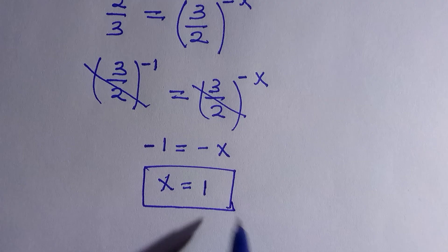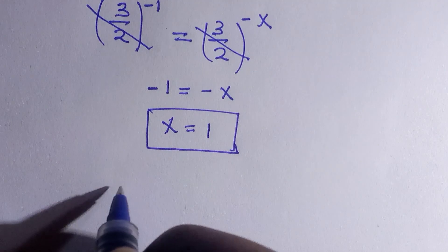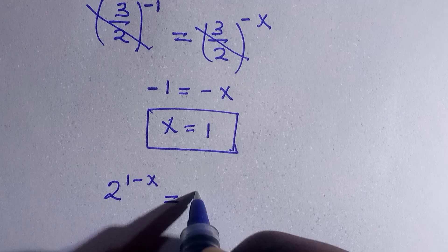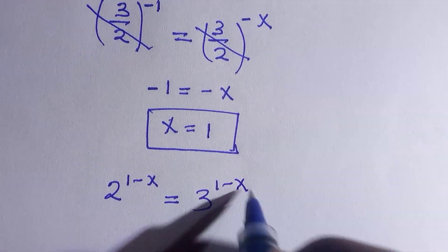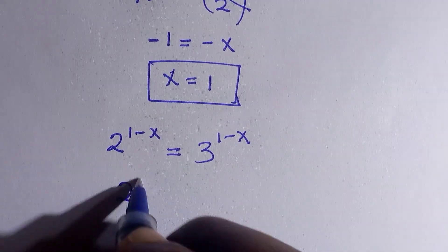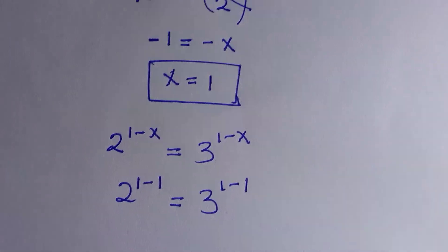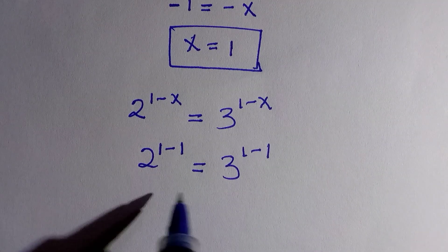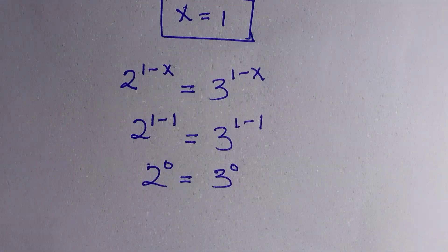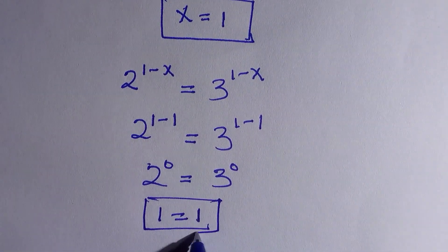And we got 1 according to the conditions above. Let's verify if this is truly satisfied. If you have 2 to the power of 1 minus x equals 3 to the power of 1 minus x, by substituting 1 — anywhere you see x, replace it with 1. Then 1 minus 1 equals 0, and any value to the power of 0 is 1. So the left hand side equals the right hand side.